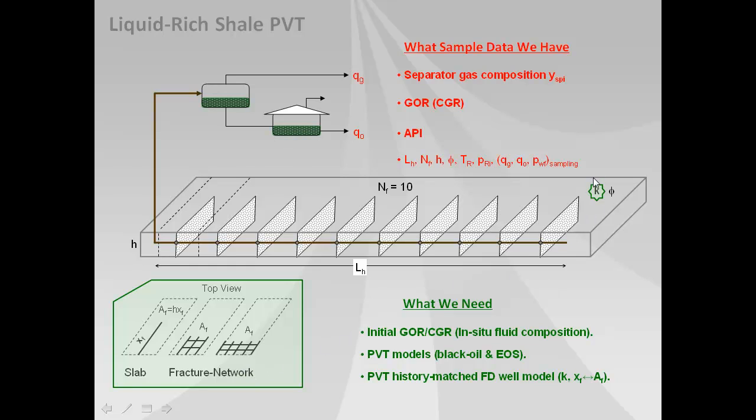The unknowns in this history matching exercise is to come up with a permeability estimate, a total fracture area to flow estimate, an initial fluid estimate in terms of composition for the EOS modeling and solution GOR for black oil modeling, and models black oil and EOS to use in the model. That's basically what's being done and it's done in a multi-level iterative manner.